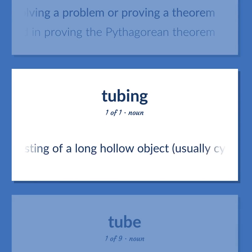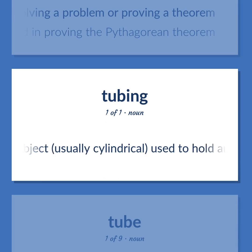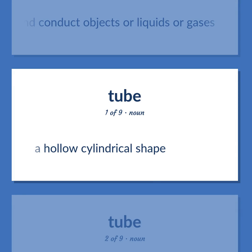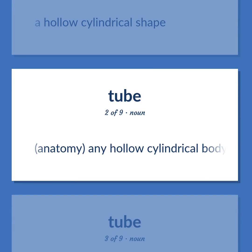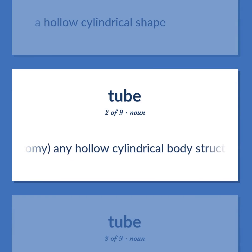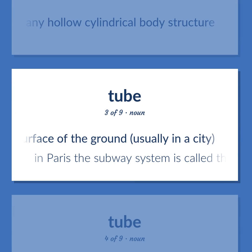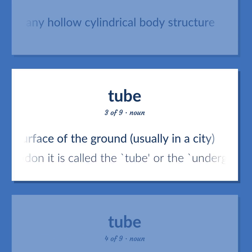Tube: Conduit consisting of a long hollow object, usually cylindrical, used to hold and conduct objects or liquids or gases. A hollow cylindrical shape. Anatomy: any hollow cylindrical body structure. An electric railway operating below the surface of the ground, usually in a city. Example: In Paris the subway system is called the metro, and in London it is called the tube, or the underground.